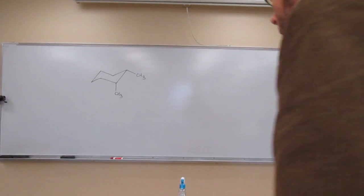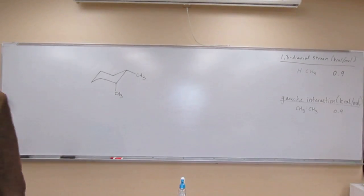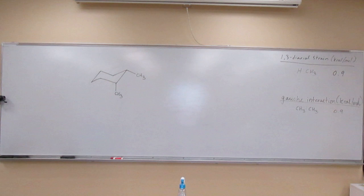Okay, so let's try one of these questions. It says, draw a ring flip isomer for the following compound and circle the most stable conformation. Indicate which is more stable by calculating the overall energy difference. So the first thing we want to do is draw the isomer.